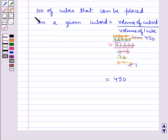Thus we have that the number of cubes that can be placed in a given cuboid is equal to 450. Hence, our final answer is 450.